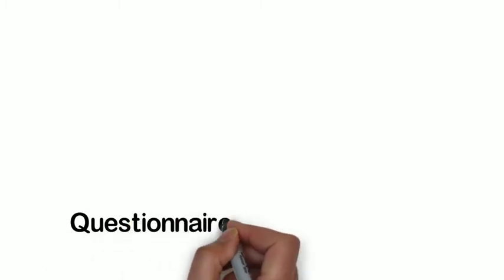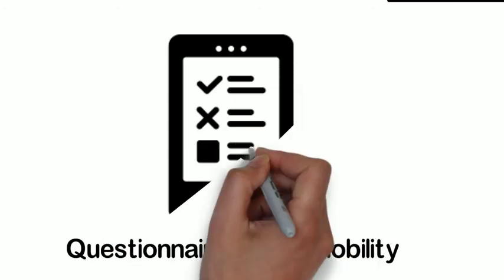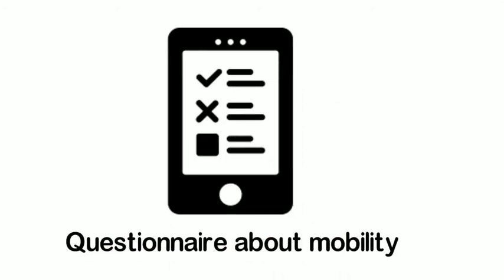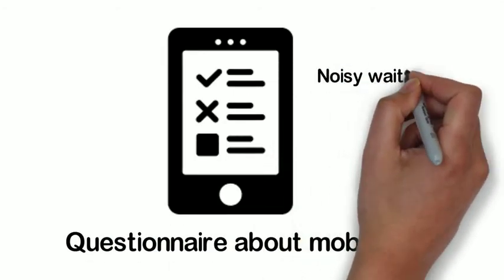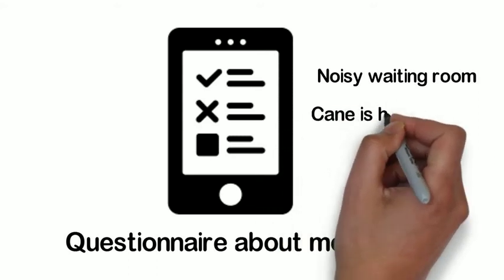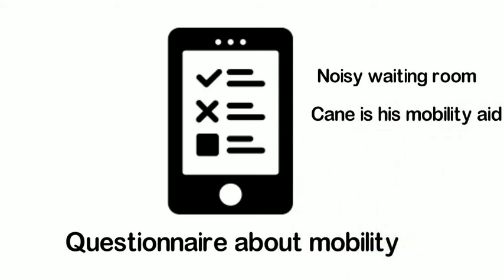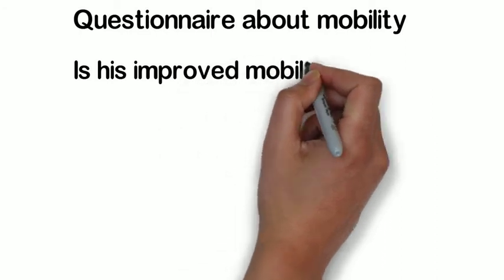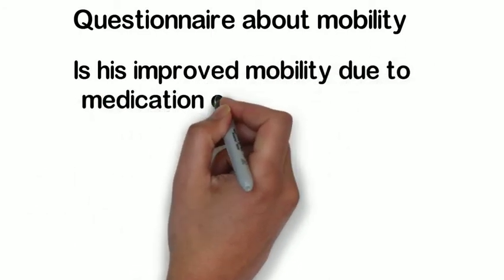John went for a doctor's appointment and was asked to fill in a questionnaire about his mobility on a tablet like an iPad while sitting in the waiting room. He was rushing to get it done and it was noisy and hard to concentrate. He thought it would be much better if he could just do this at home. He also wasn't sure how to answer certain questions about his mobility. He recently started using a cane and thinks it's the cane, not the medication, that seems to be making the big difference.